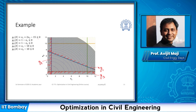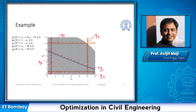My fourth constraint says that the x1 value should be less than or equal to 10. The green vertical line represents g4, and the points on the left-hand side of this line are feasible. My fifth constraint says that x2 should be less than or equal to 10. This line represents g5 and the points below this line are going to be feasible.